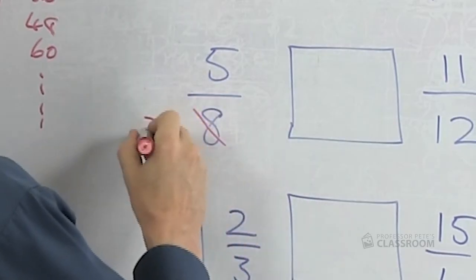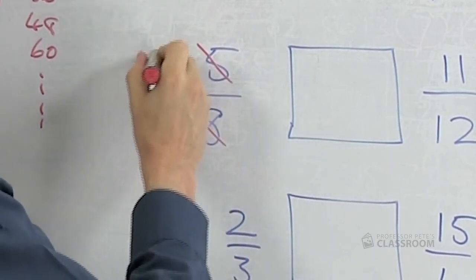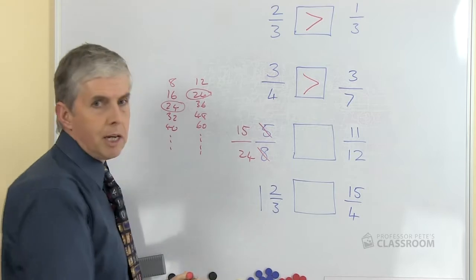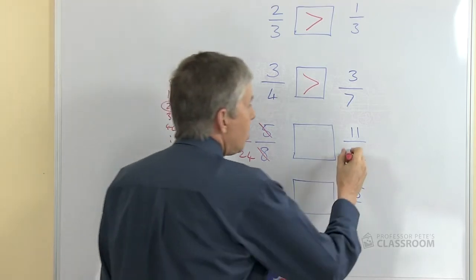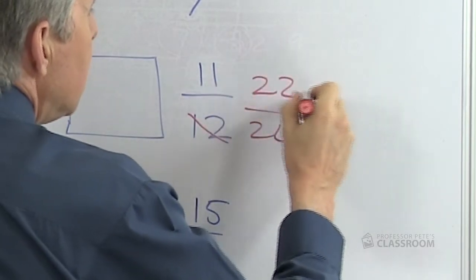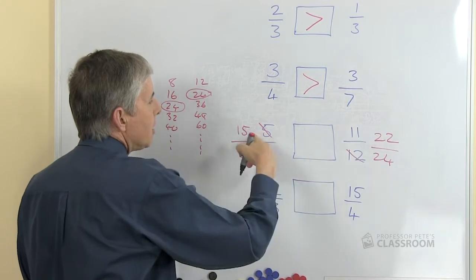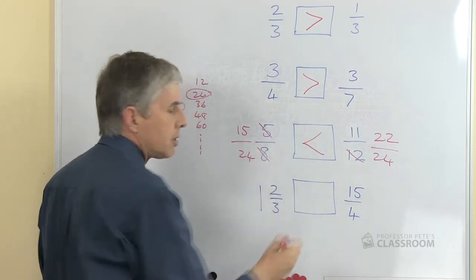So we can convert this one into twenty-fourths by multiplying by three, so we'll multiply the five by three that will give us fifteen twenty-fourths. Over here we can change twelfths into twenty-fourths by multiplying top and bottom by two, that's twenty-two twenty-fourths. Obviously twenty-two is bigger than fifteen so our symbol goes that way around.